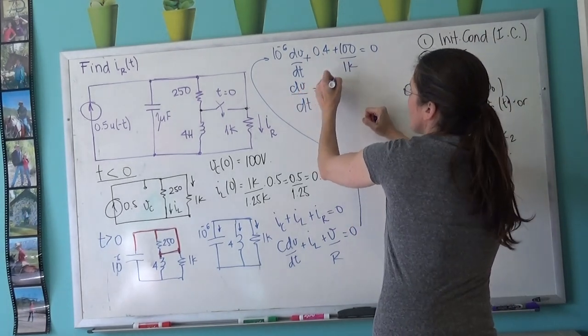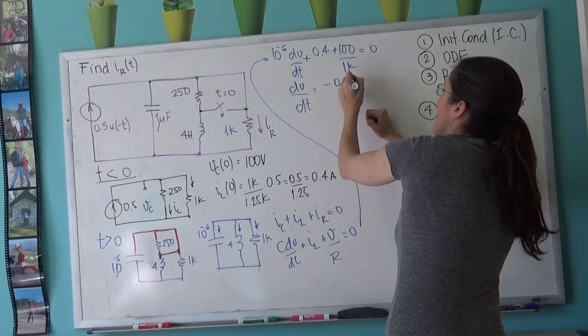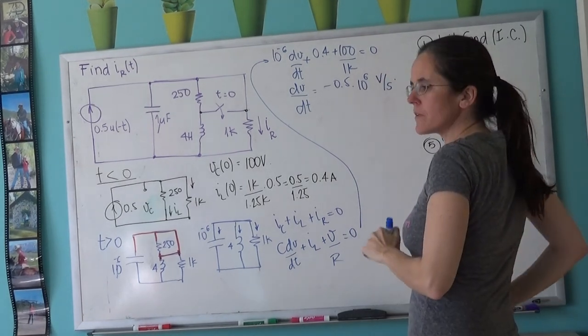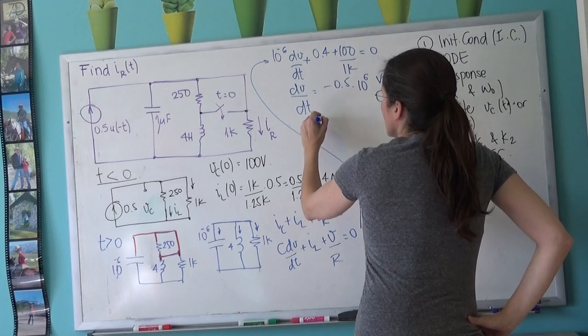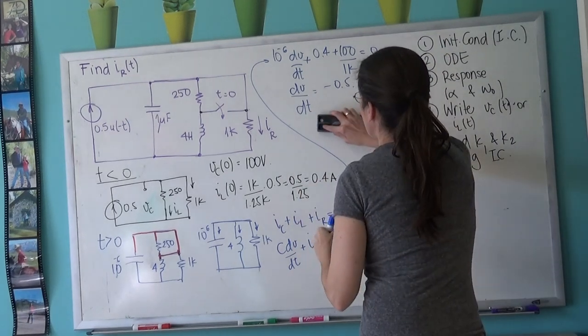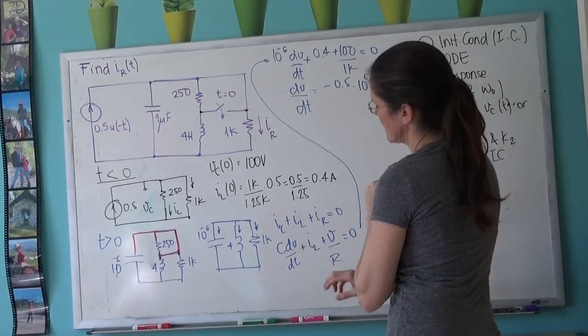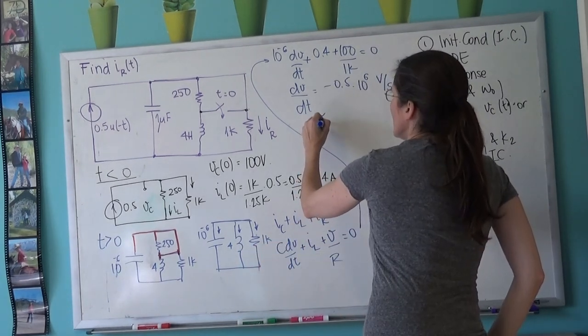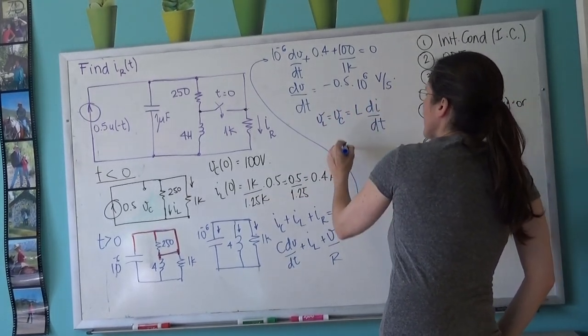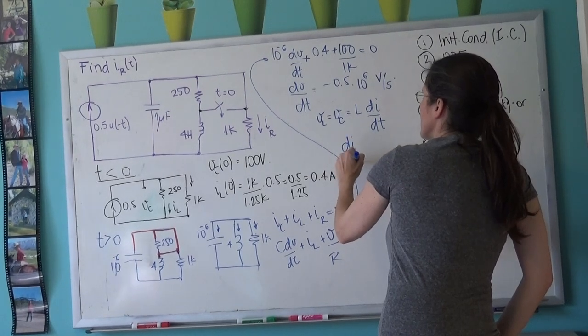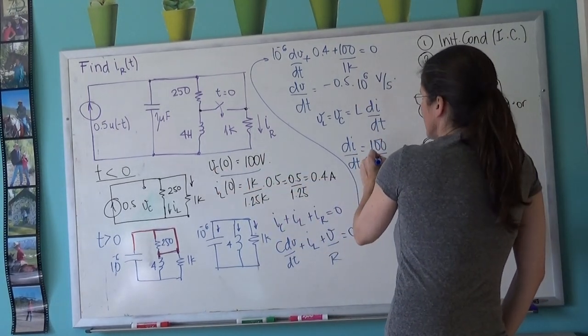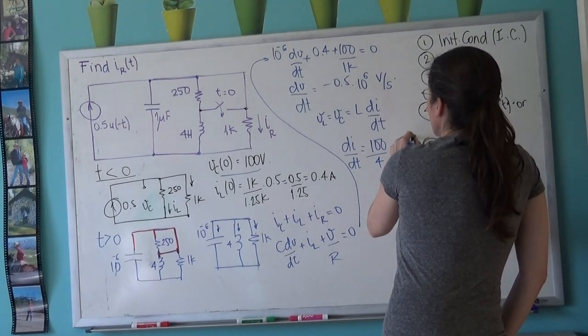Same thing we can do with IL. Actually, I need to find the di/dt. So it's VL, which is the same thing as VC in this case because they're all in parallel. It's L di/dt, and therefore di/dt is the voltage on the capacitor at zero, which is a hundred, divided by the inductor, which is four, so it's 25 amps per second.